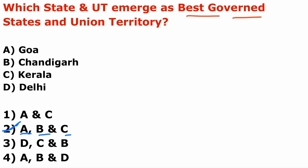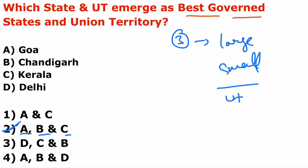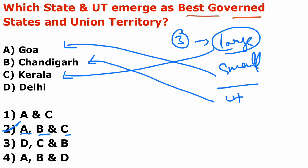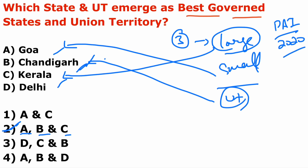There are three categories: the large state category, the small state category, and the UT category. In the large state category, the best state is Kerala. In the small state category, it is Goa. In the UT category, it is Chandigarh. This is the Public Affairs Index 2020, also known as PAI. Performance is analyzed in the context of sustainable development defined by three pillars: equity, growth, and sustainability, covering 13 sustainable development goals.